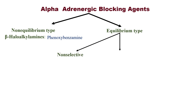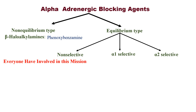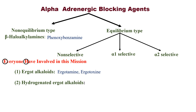In the equilibrium type there is non-selective, alpha-1 selective, and alpha-2 selective. In non-selective, it means it is not for selective people — it is for everyone. So remember everyone is involved in this mission. E stands for ergot alkaloids — example: ergotamine and ergotoxin. H stands for hydrogenated ergot alkaloids — example: dihydroergotamine and dihydroergotoxin — here 'dihydro' is simply added.